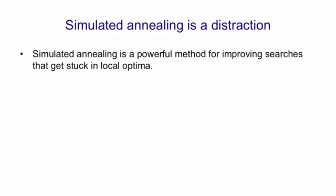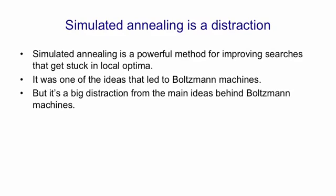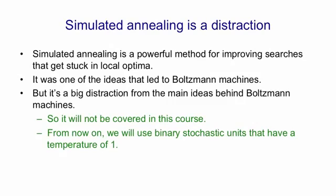Although simulated annealing is a very powerful method for improving searches that get stuck in local optima, and although it was influential in leading Terry Sejnowski and me to the ideas behind Boltzmann machines, it's actually a big distraction from understanding Boltzmann machines. So I'm not going to talk about it anymore in this course. From now on I'm going to use binary stochastic units that have a temperature of one — that is, the standard logistic function in the energy gap.